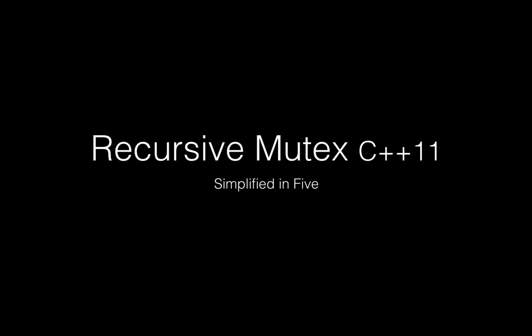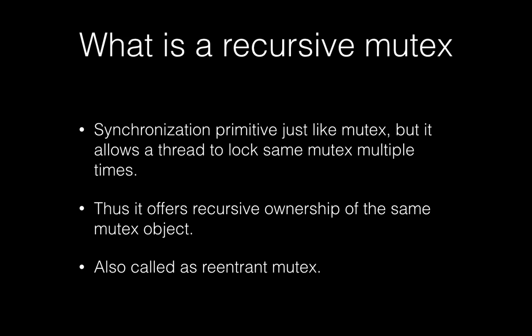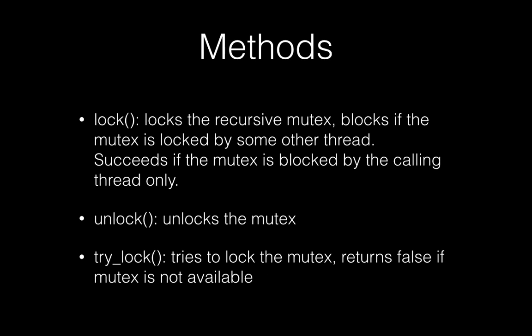Welcome to Simplified in 5. Today we are going to talk about recursive mutex in C++11. A recursive mutex is a synchronization primitive just like mutex, but the unique quality it has is it allows a thread to lock the same mutex multiple times, thus offering recursive ownership of the same mutex. It is also called a reentrant mutex.